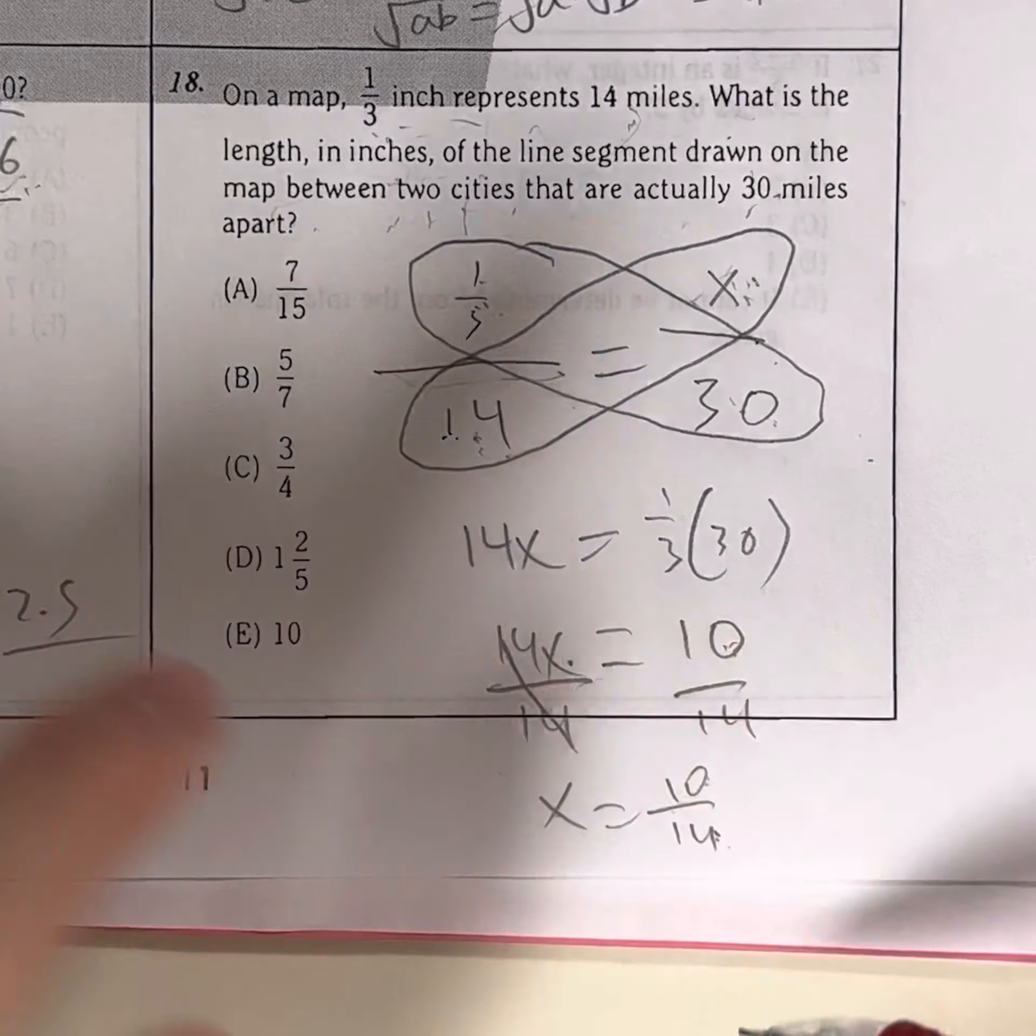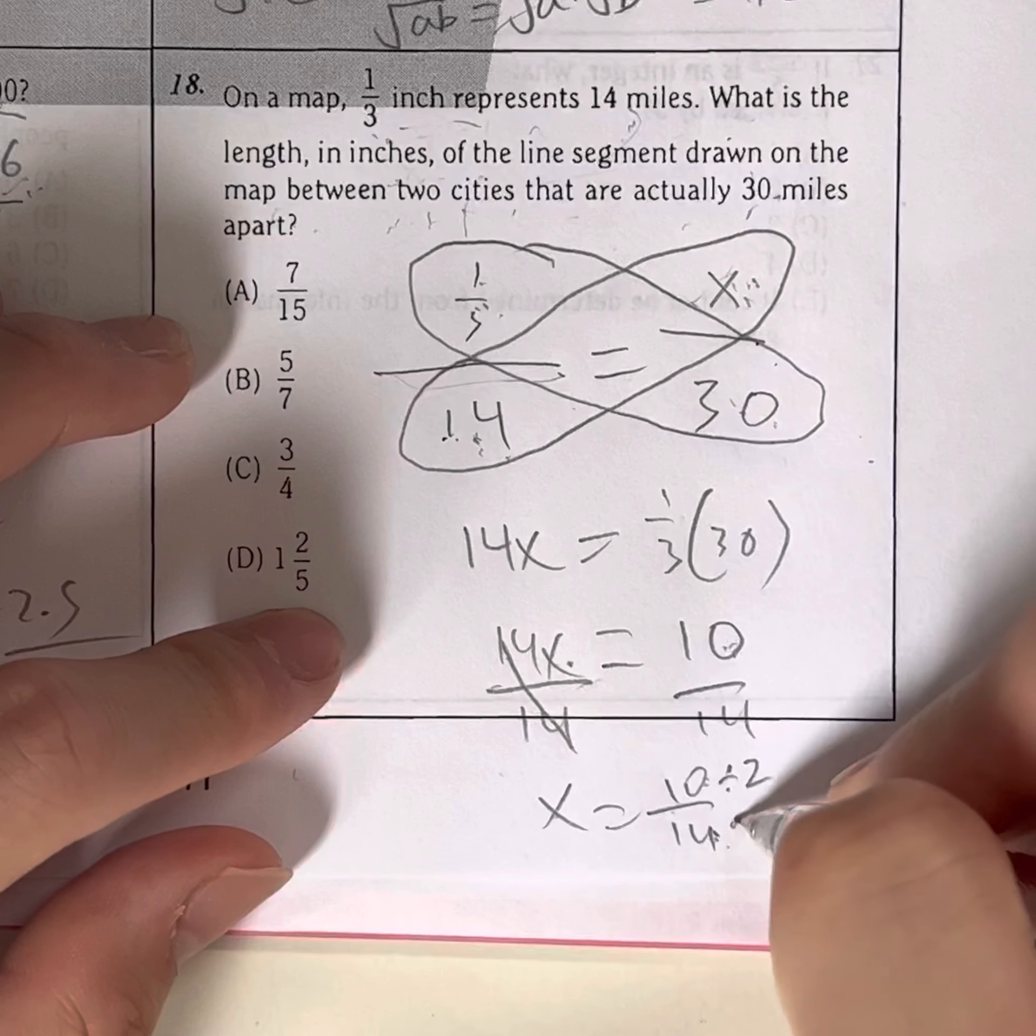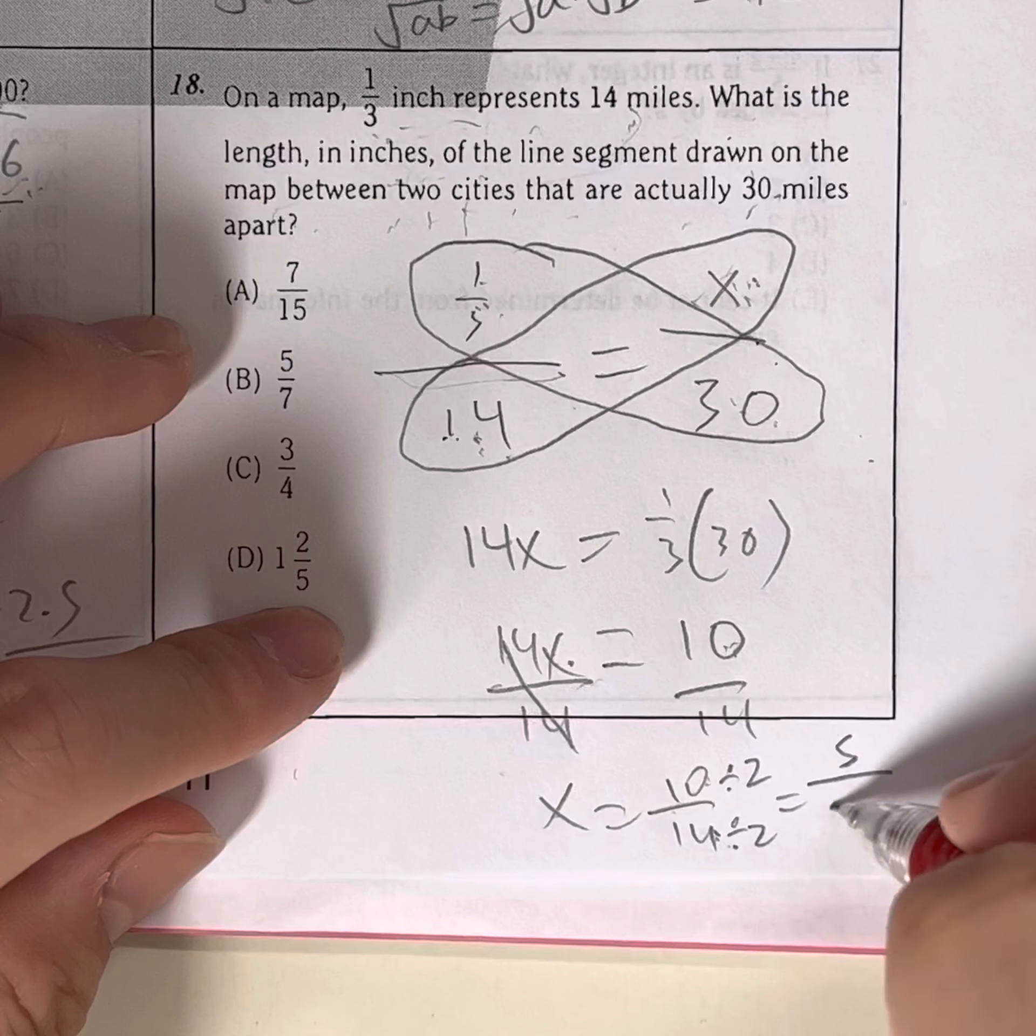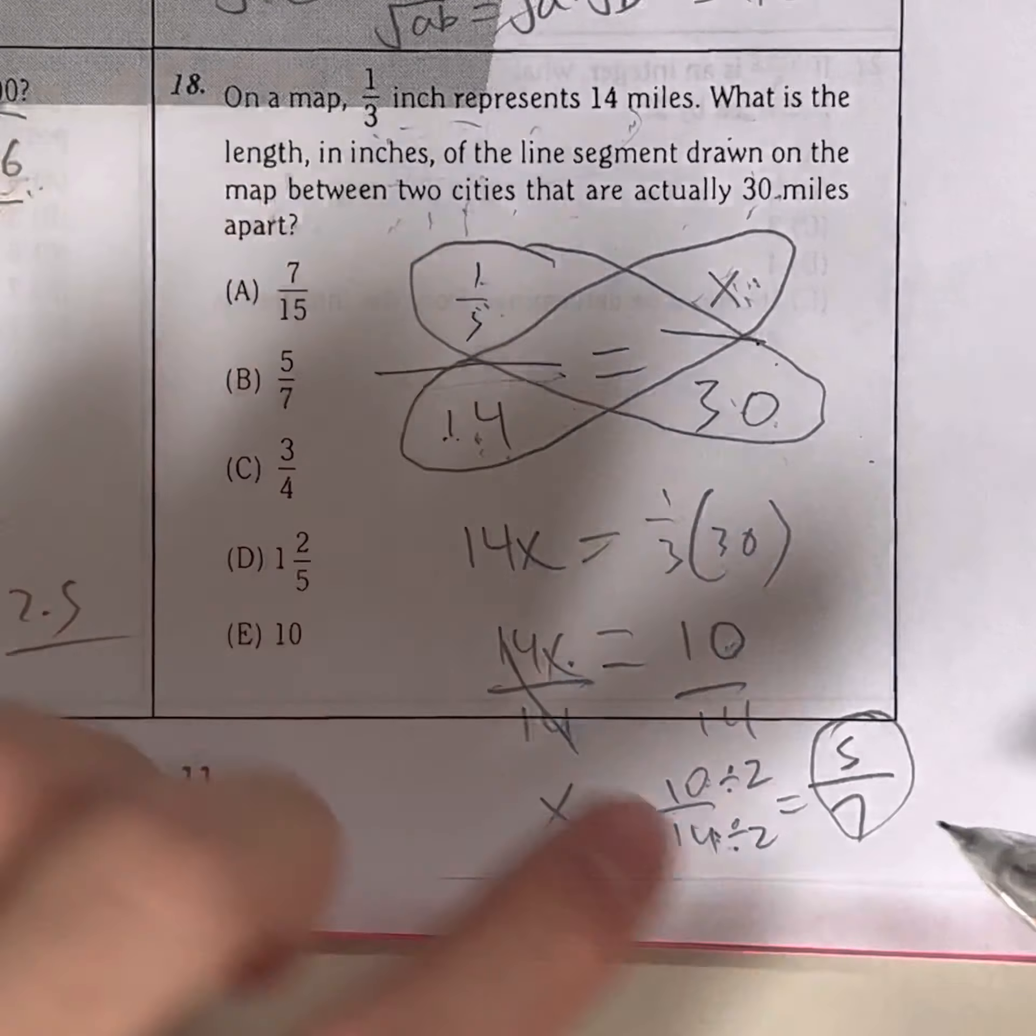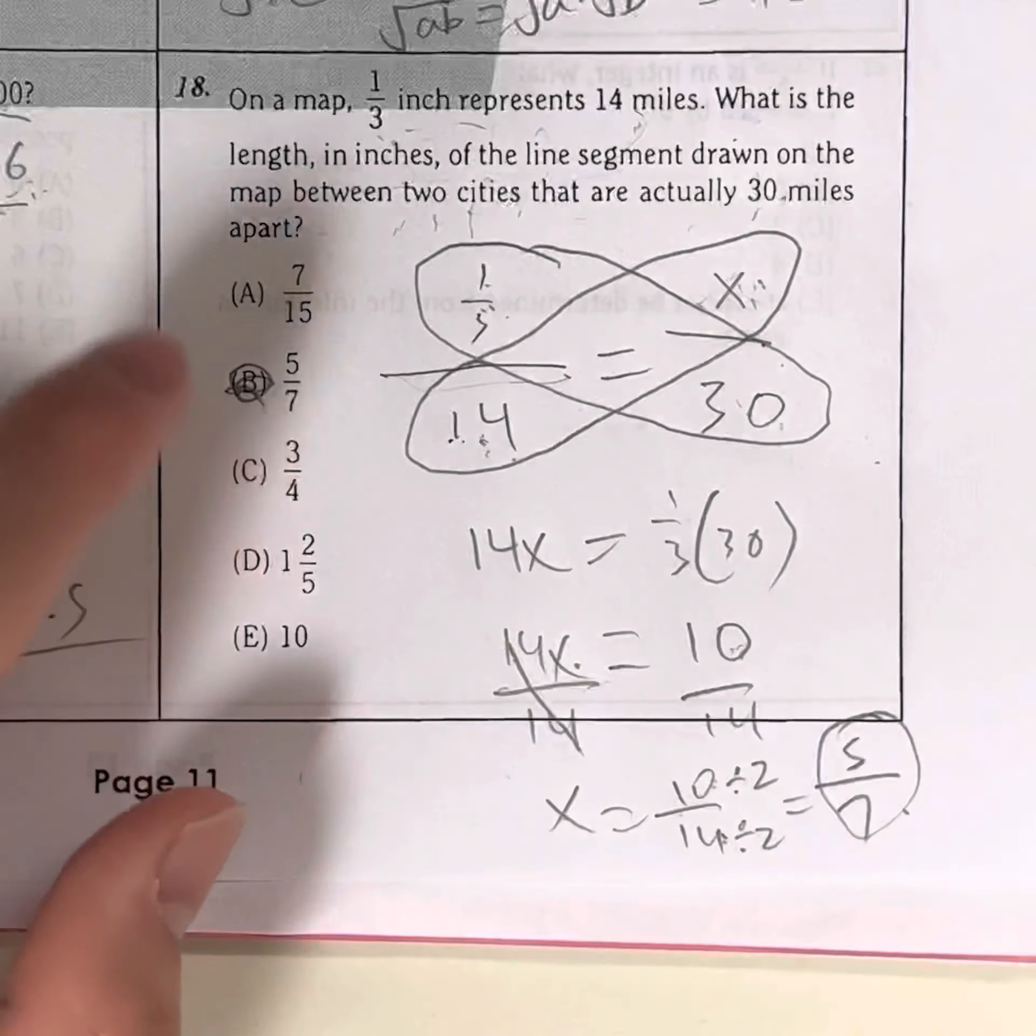Now, we don't have 10 over 14 in our answer choices, so that means we might have to simplify the fraction. So does 10 and 14 each have a greatest common factor? Yes, it's going to be 2. Divide the top by 2, divide the bottom by 2. 10 divided by 2 is 5. 14 divided by 2 is 7. You can't simplify this any further, and it's in your answer choice. So your answer has to be B, 5 over 7 inches.